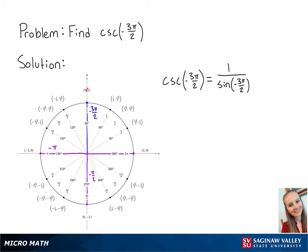Sine correlates to the y coordinate on the unit circle. So 1 over sine of negative 3 pi over 2 is equal to 1 over 1, which is equal to 1. And this is the final answer.